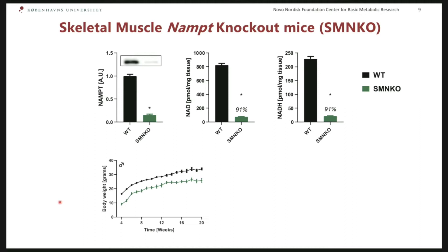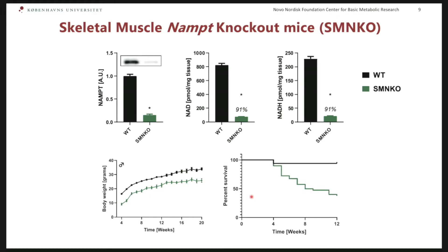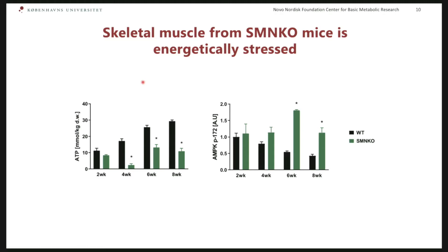These mice are smaller over the time course studied and they die prematurely. Starting from four weeks of age, they start to die, and at 12 weeks of age, only around 35% of mice remain. The muscles are energetically stressed, indicated by a huge reduction in ATP measured at four weeks of age, which rebounds a little at six and eight weeks. We can also see increased AMP-dependent kinase activity at six and eight weeks of age, reflecting this low energy state.